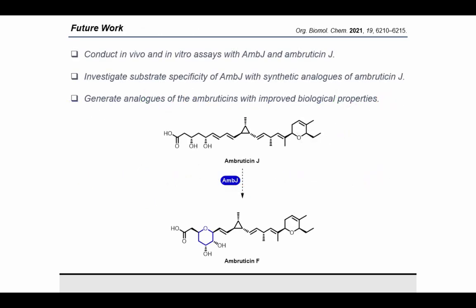Having now synthesized Ambruticin J, we are currently conducting in vivo and in vitro assays with AmbJ and hope to develop the enzyme into a biocatalyst for THP formation. Furthermore, we wish to use the highly modular synthesis to generate analogues of the Ambruticins with improved biological activity.